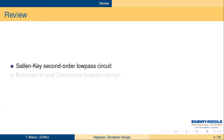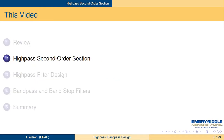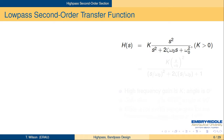To review, previously we saw the Sallen-Key second-order low-pass circuit, and we used it to implement Butterworth and Chebyshev higher-order — fourth, fifth, sixth — low-pass filters. In this video, let's look at the high-pass second-order section, and then we'll use it to build some higher-order filters.